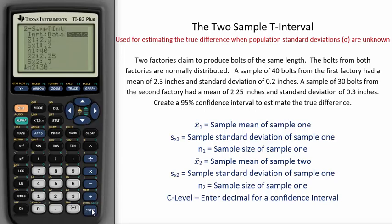From here, you'll need to enter in the data or the summary statistics. If you are given the data, go to STAT edit and then put in sample one on list one and sample two on list two. We are given the summary statistics.